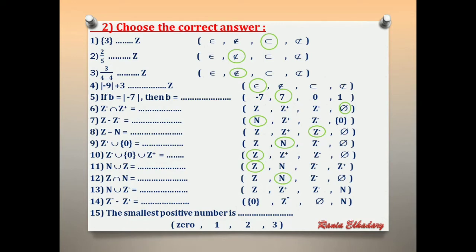Number 13: natural union Z negative. We have negative numbers, positive numbers, and 0 — all integers. So the answer is Z.